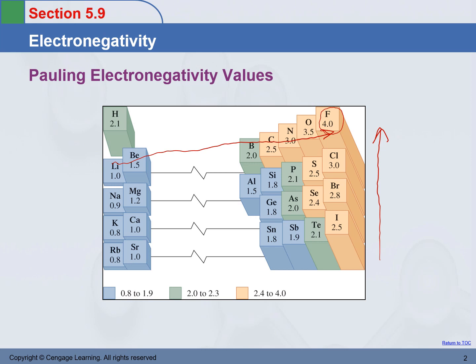Let's think about the elements in the same period — going from lithium to fluorine. Lithium has three protons in it. Fluorine has nine protons. Since they are at the same period, period number two, they both have two layers of electrons — two shells of electrons.